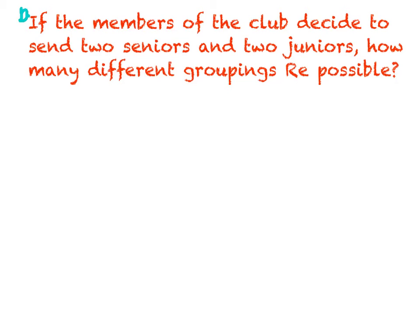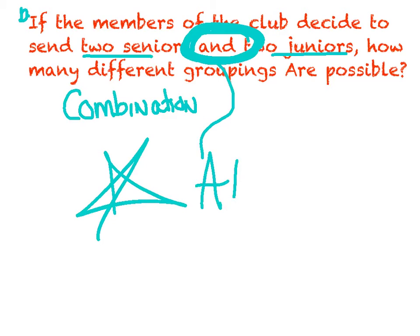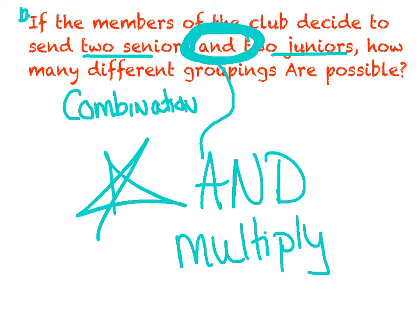Question B. If the members of that character club are to send two seniors and two juniors, how many different groupings are possible? A couple big things we've got to take away from this one. I'm still picking two seniors, two juniors. I'm not being specific. I can pick any two seniors and any two juniors. So this is still a combination. I'm not talking about position or placement. I'm just picking two of each. Now, the other thing I need you to do is I need you to circle this word and. And and is going to be a big deal in probability. When you see the word and, this is your trigger to make sure you know to multiply. And means to multiply.